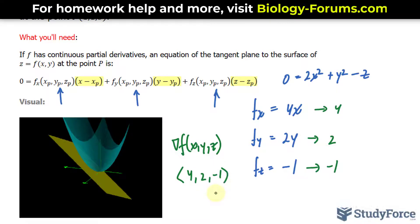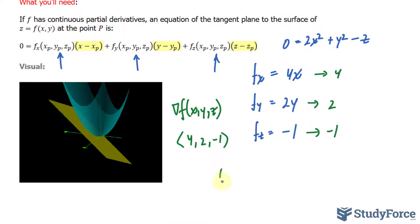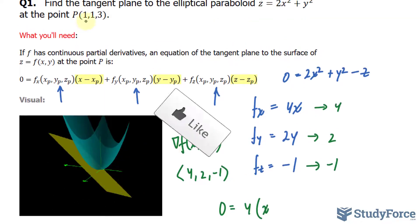What I will do next is take 4 and substitute it where I see this, take 2 and substitute it where I see that, and take negative 1 and substitute it there, leaving me with 0 equals 4 bracket x minus 1, the x coordinate.